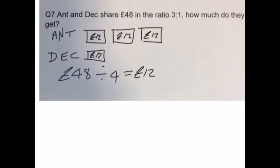So how much does Ant get? Well, 12 plus 12 plus 12 is £36. And Dec only gets 1 share. So that's only £12.